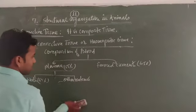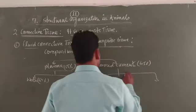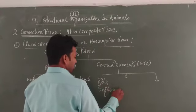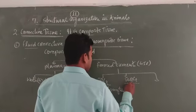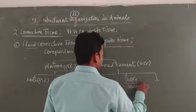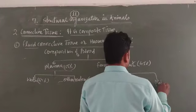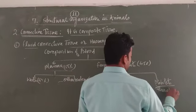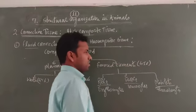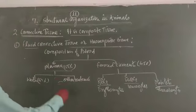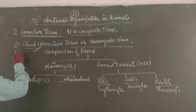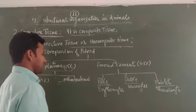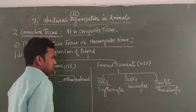The formed elements are of three types. First is RBC, also called red blood cells or erythrocytes. Second is WBC, or white blood cells or leukocytes, which are white in appearance. Third is platelets, also called thrombocytes. All three types of formed elements are present in blood with large intercellular spaces. In fluid connective tissues, fibers are absent, but cells and plasma in the form of matrix are found.